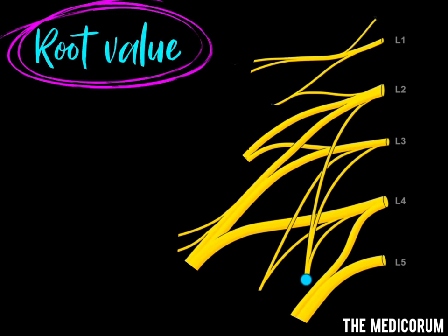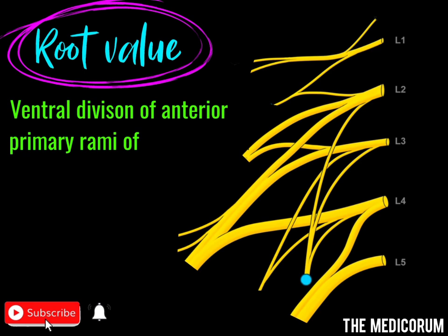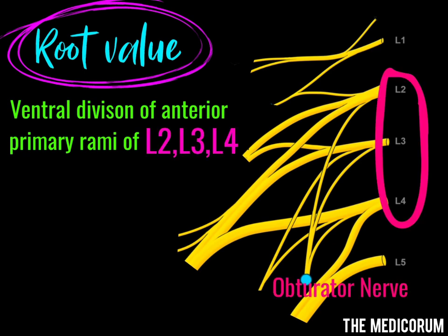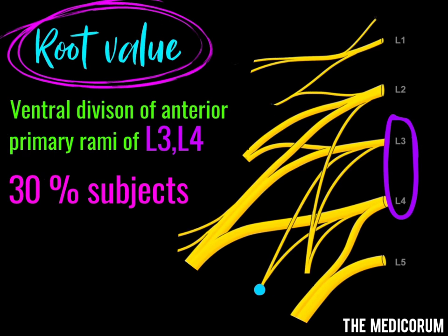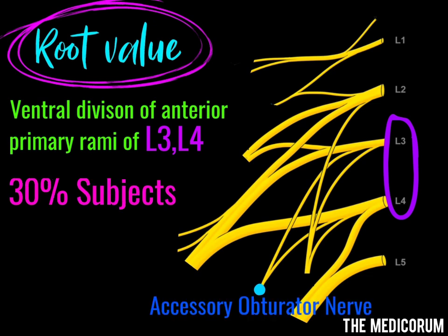It is formed by the ventral divisions of the anterior primary rami of spinal nerves L2, L3, and L4. But in 30% of subjects, the anterior primary rami of L3 and L4 sometimes give the accessory obturator nerve. One unique feature is its nerve supply to the psoas major muscle.